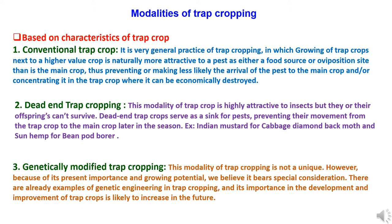By this, there is preventing or making less likely the arrival of the pest to the main crop, or concentrating it in the trap crop where it can be economically destroyed.